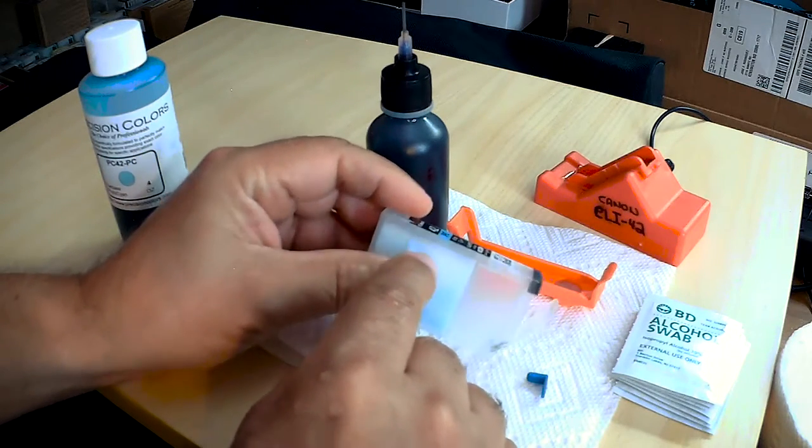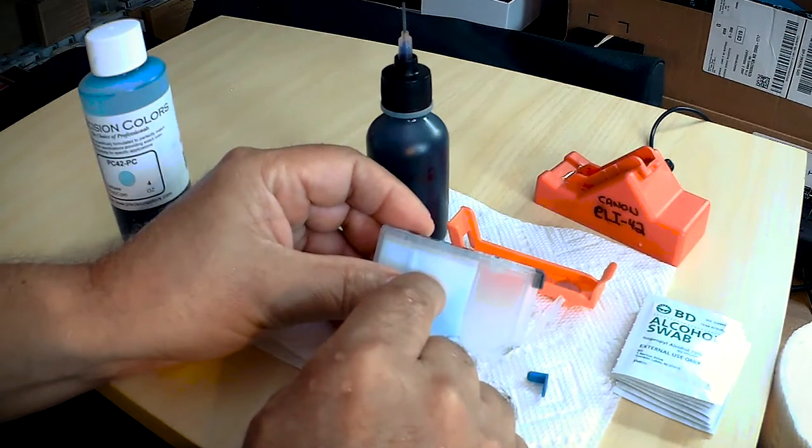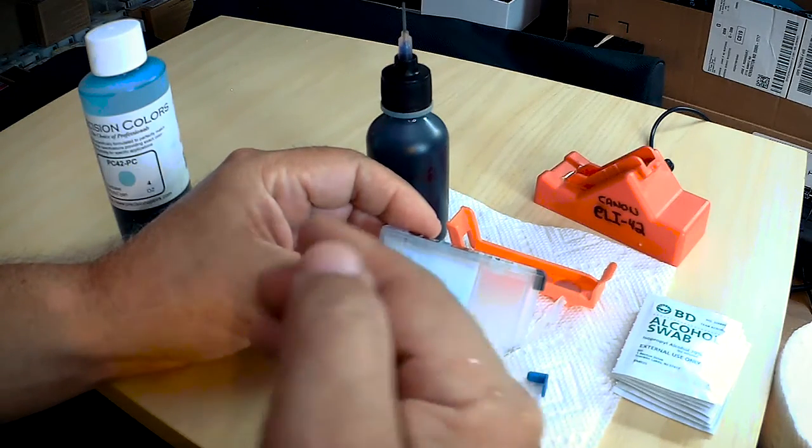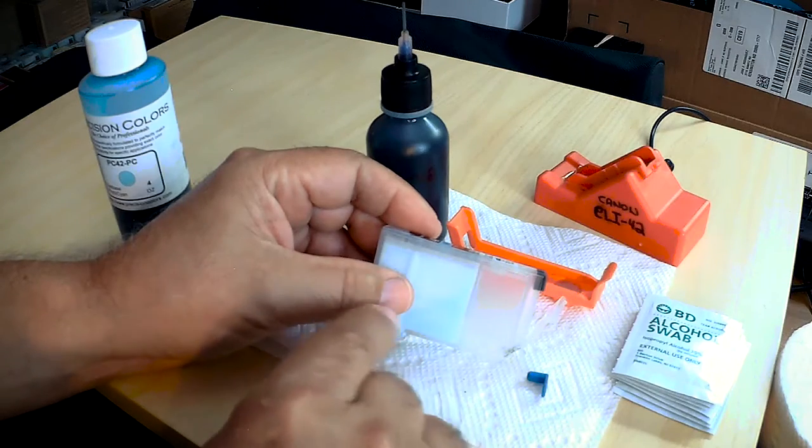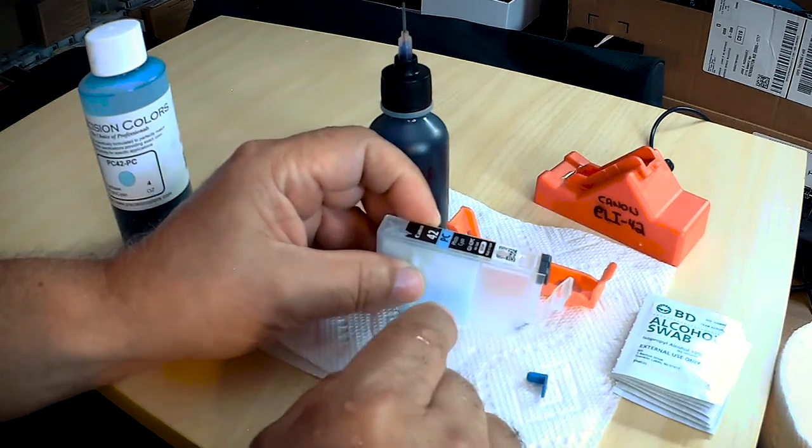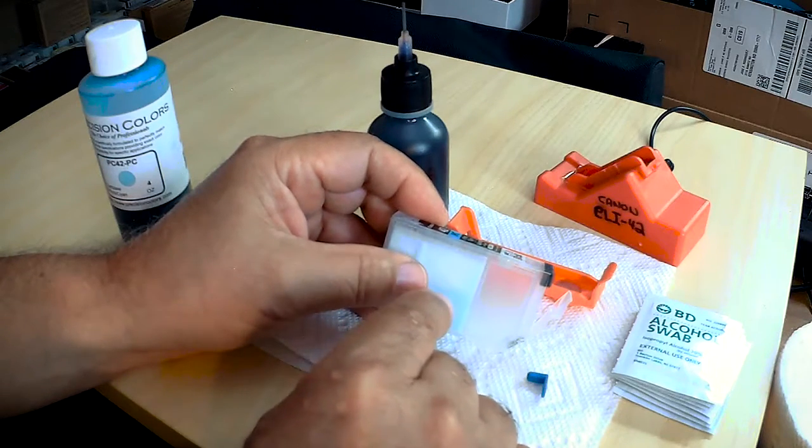In other words, ink will start being drawn out and air will come in through this vent and start filling up the pores of the upper portion of the sponge, and you want to avoid that. Unless, if you're not going to refill them, then by all means use them until they're declared empty. But if you're going to refill them, please follow this advice.